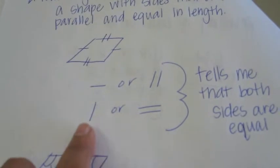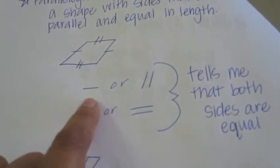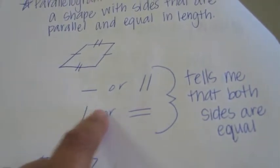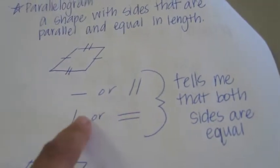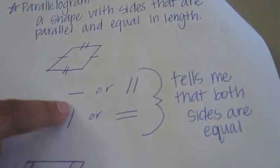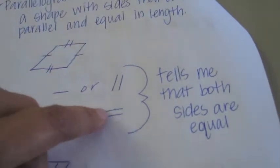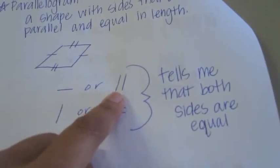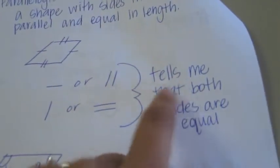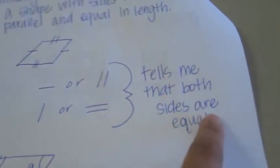You can use this symbol, or you can move in the opposite direction and put them like this. Remember, those types of lines tell me that both sides are equal.